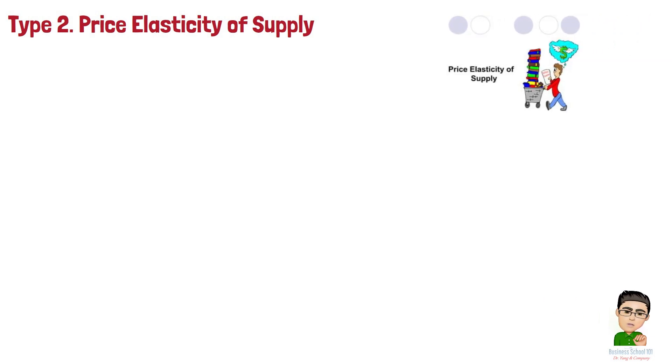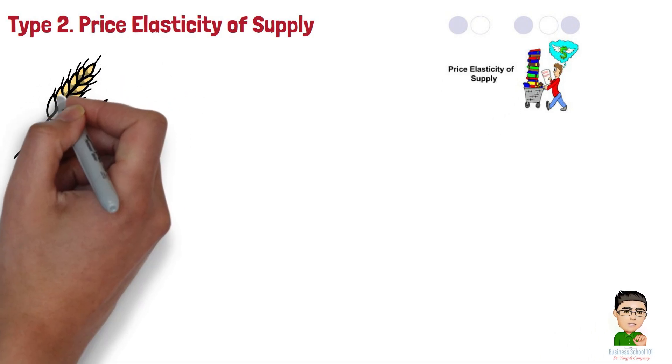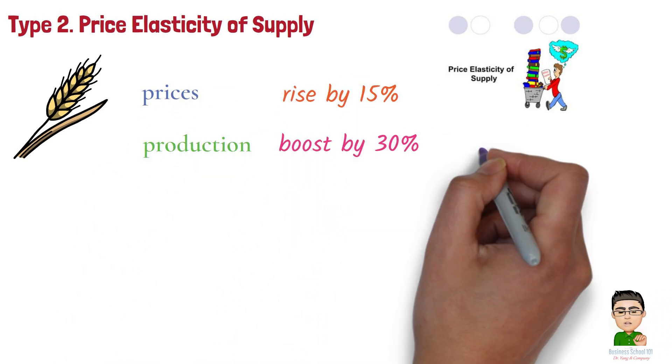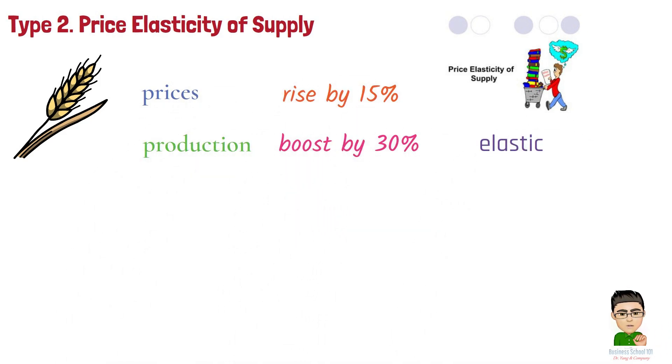Type 2: Price elasticity of supply. Price elasticity of supply measures how much the quantity supplied changes in response to a price change. It reflects how easily producers can adjust output when prices fluctuate. For instance, if wheat prices rise by 15% and farmers boost production by 30%, supply is elastic, showing a quick response to price changes.